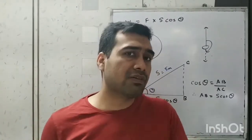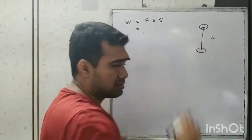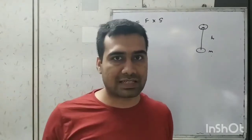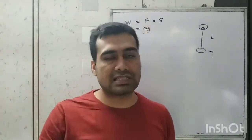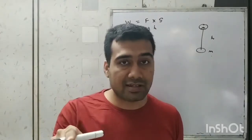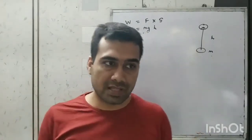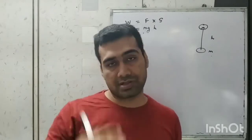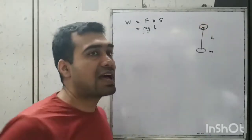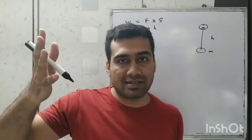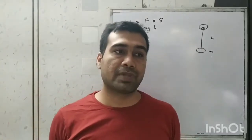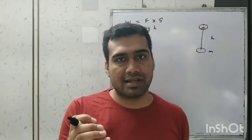An object with mass m is lifted to height h. The force applied in overcoming gravity equals the weight mg, and displacement is h, so the work done by us is mgh. The work done by gravity is −mgh, since gravitational force acts downwards while displacement is upwards. This work is stored as gravitational potential energy, so potential energy = mgh. Energy is the capacity to do work, hence their units are the same: joule.